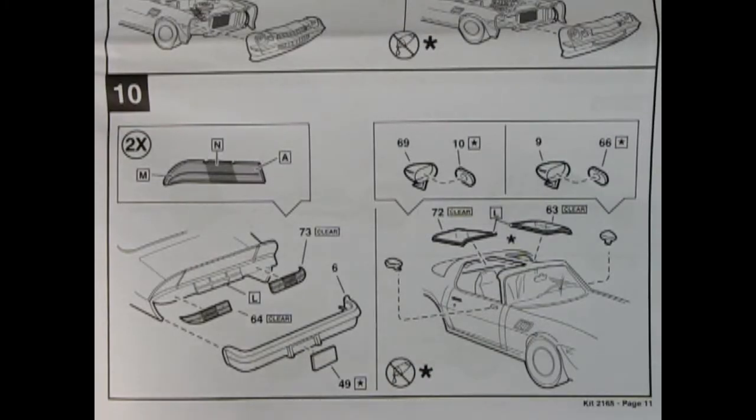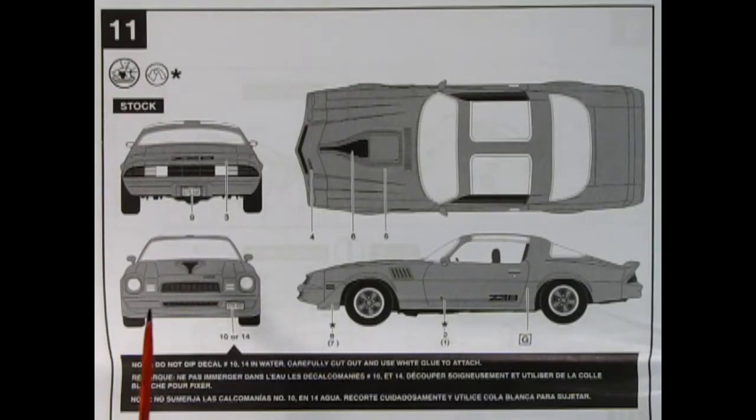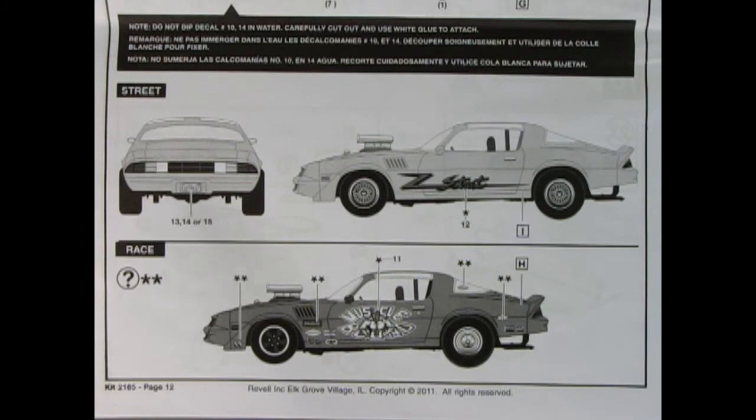Panel 10 shows us what's going on at the back of the car with our tail lamps being painted and glued into place as well as our rear bumper and our license plate. Then on the sides we have our side view mirrors and our t-tops being glued in as well. Panel 11 shows us the decal locations for our factory stock version of the Camaro with all the different stripes and the Z28 logo. Down below we have the decal location for our street and race version. Here we have the Z street decal which goes on the side and for our race car we've got factory sponsors as well as muscle bound for the doors.